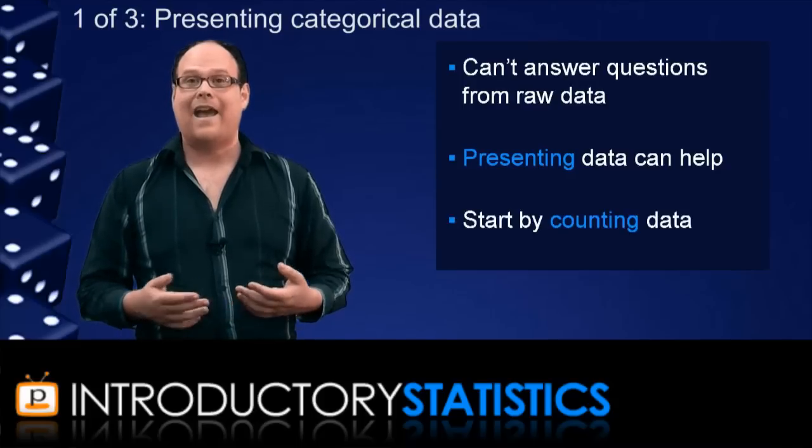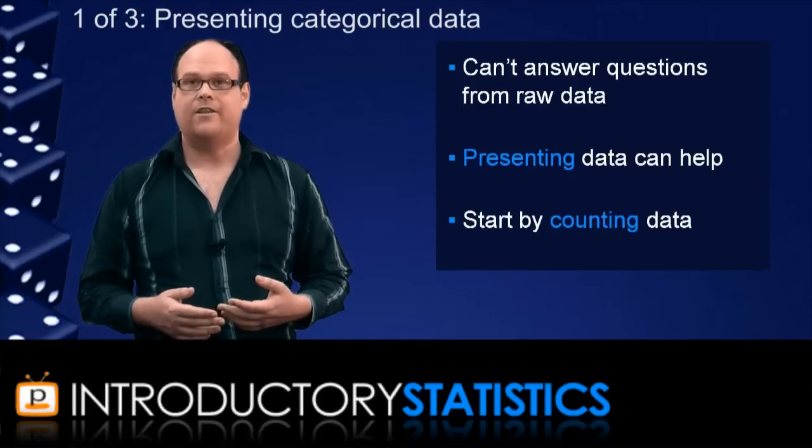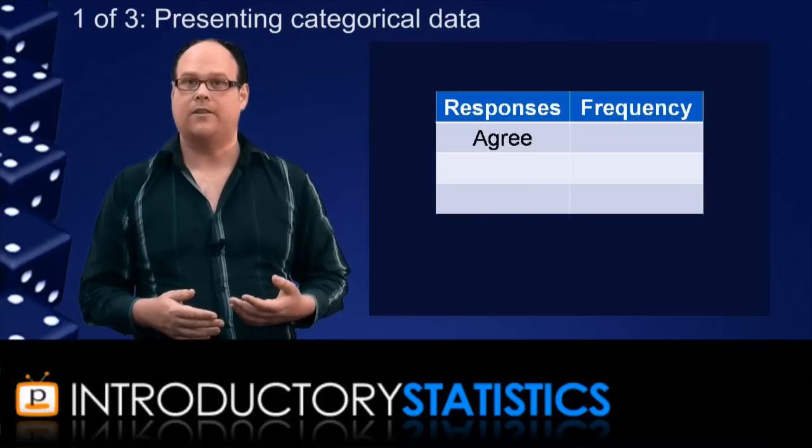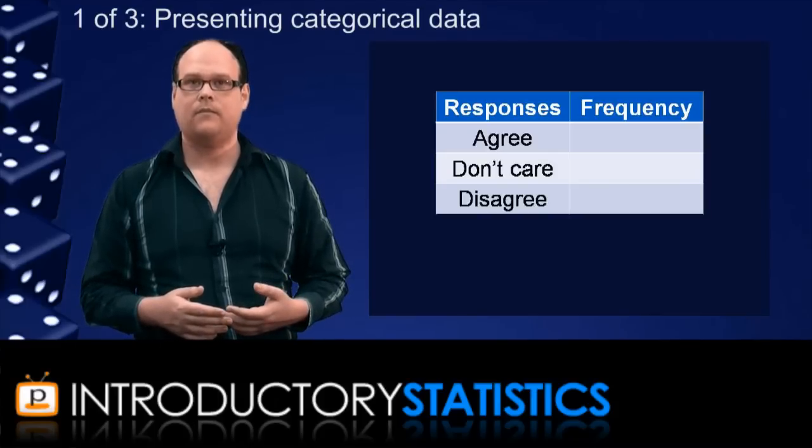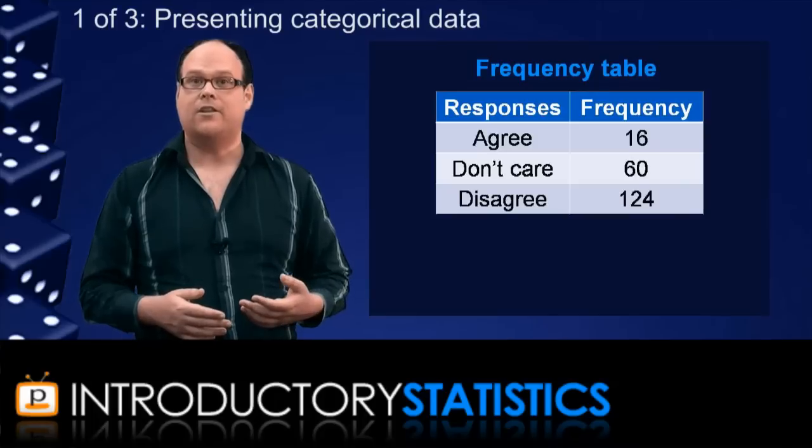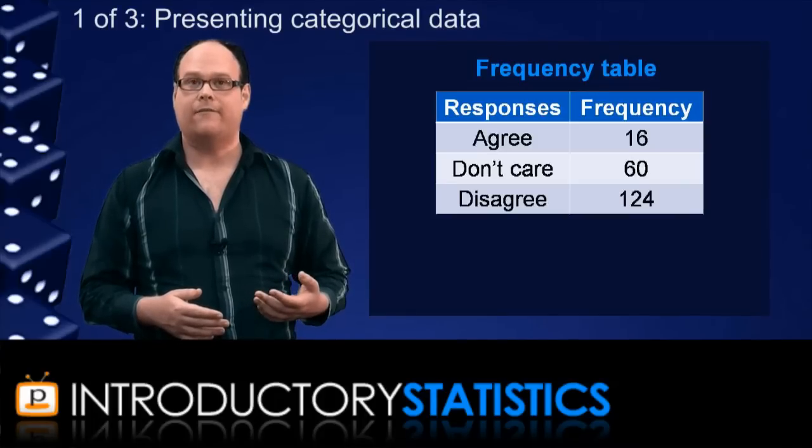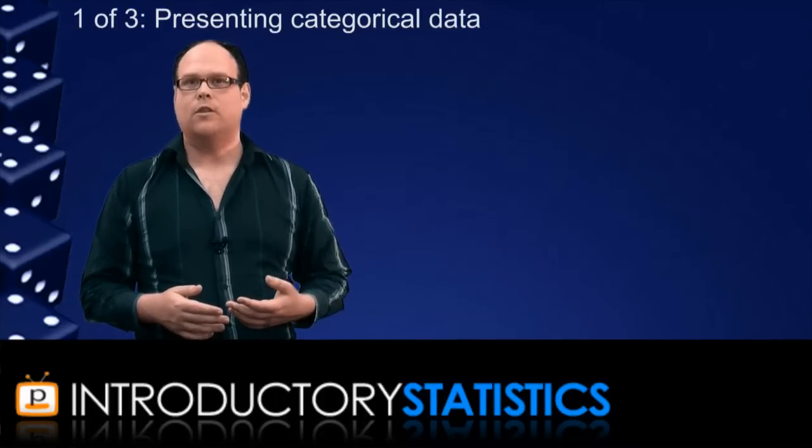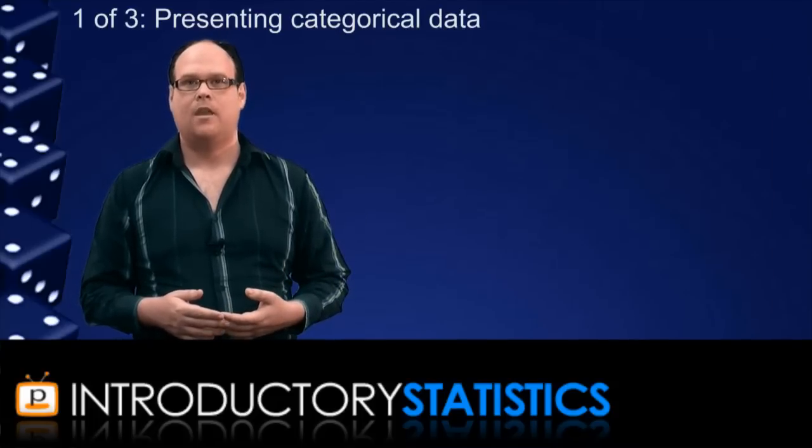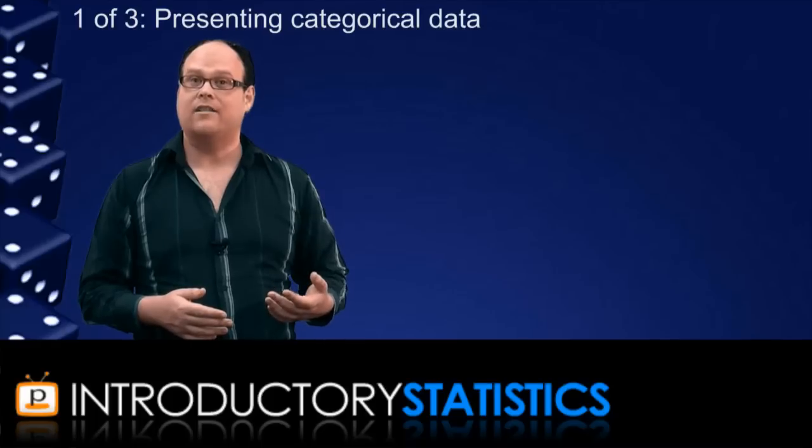Now, to start with, you can count the data. In particular, for each of the three possible categories, you can count how many times each one is observed in the 200 responses. Then, you can present this in a table called a frequency table. And already, just by looking at this table, we have a better feeling for the data. If we want, we can also provide the relative frequency table, which shows the proportion of data values that fall in each category.